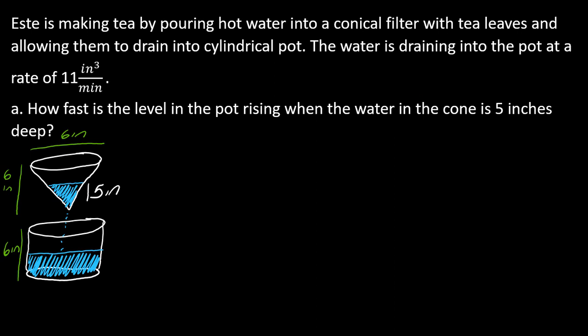This is a two-part problem. The first part: a lady is making tea by pouring hot water into a conical filter with tea leaves and allowing them to drain into a cylindrical pot. The water is draining into the pot at the rate of 11 cubic inches per minute. The first question is how fast is the level of the pot rising when the water in the cone is five inches deep. The diameter of both the cone and cylinder is six inches, the cone is six inches tall, and the cylinder is six inches tall.